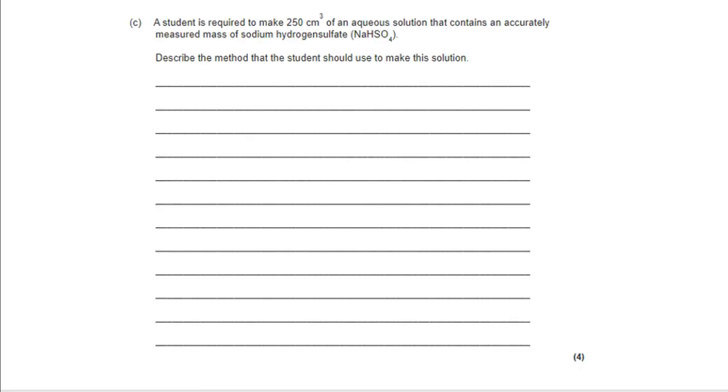So, the question is, a student is required to make 250 centimetres cubed of an aqueous solution that contains an accurately measured mass of sodium hydrogen sulphate. Describe the method the student should use to make this solution.